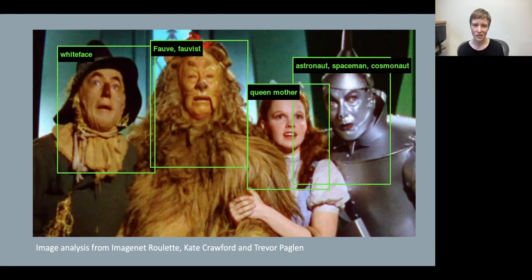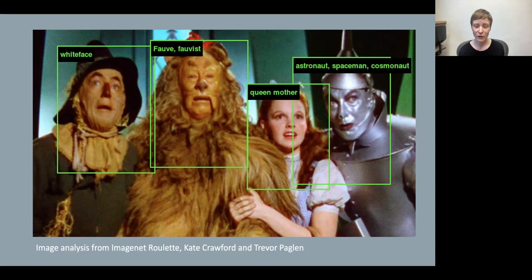When ImageNet Roulette first debuted, it went viral — because playing with images this way is a lot of fun, and some of the labels generated are just really outlandish. It spread across Facebook, Twitter, and Instagram, with all kinds of people posting the results of their own image analyses. And what people very quickly discovered as they began sharing was that the labels attached to the training set had implicit biases that had been encoded into the program by human programmers.